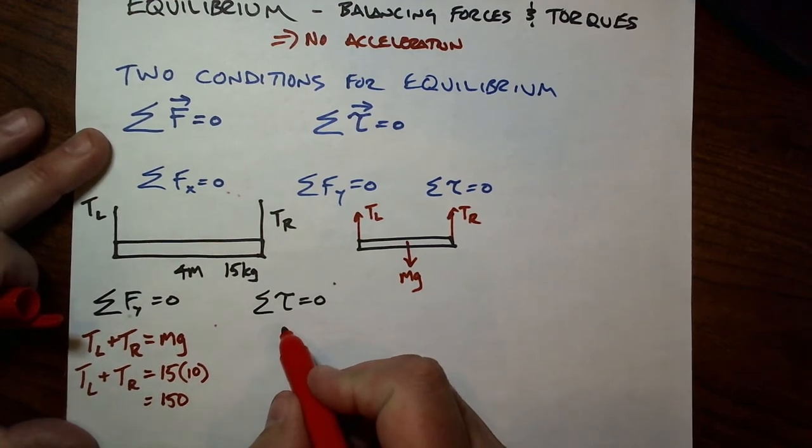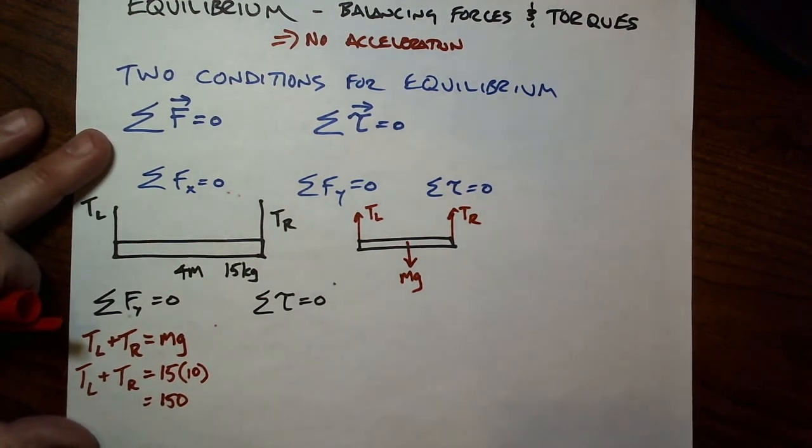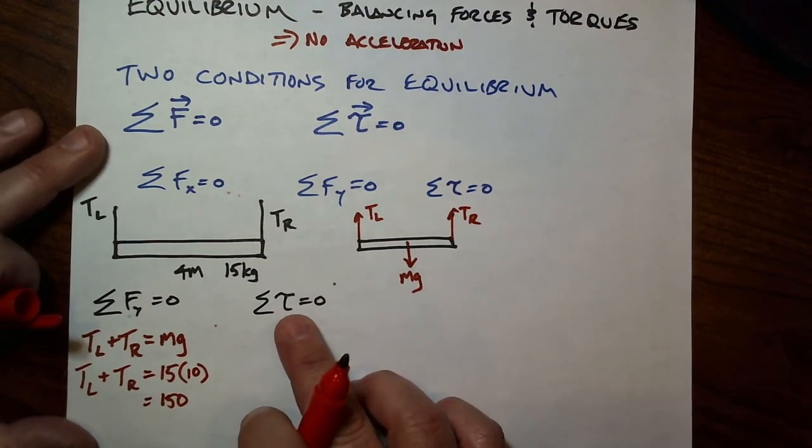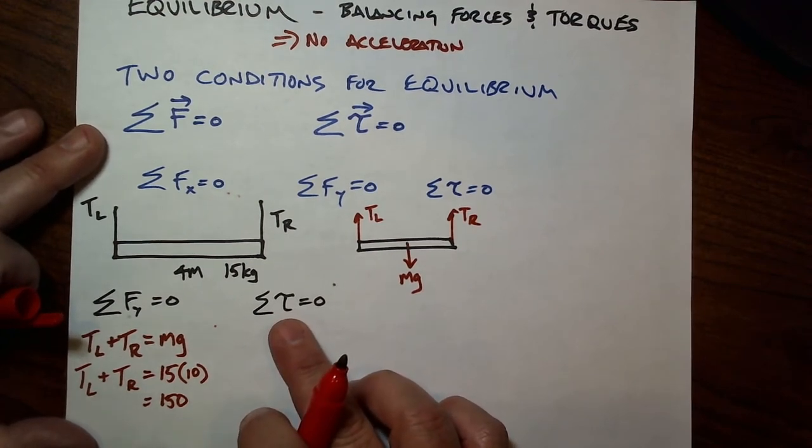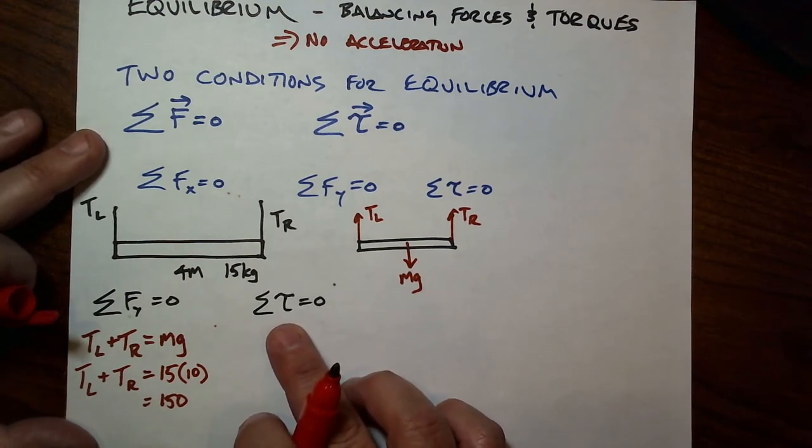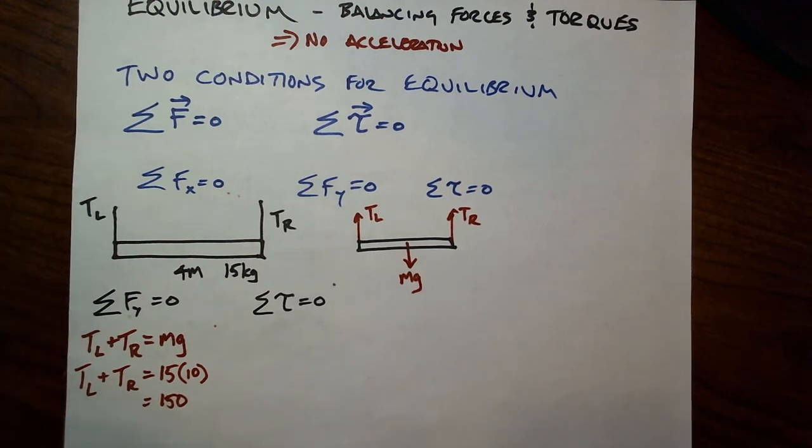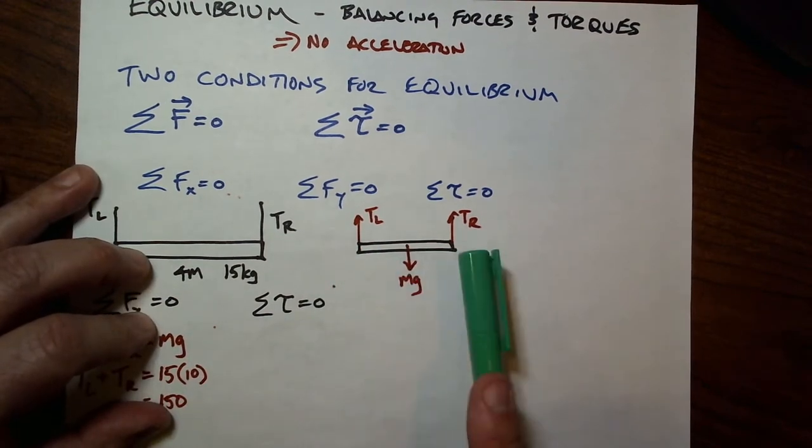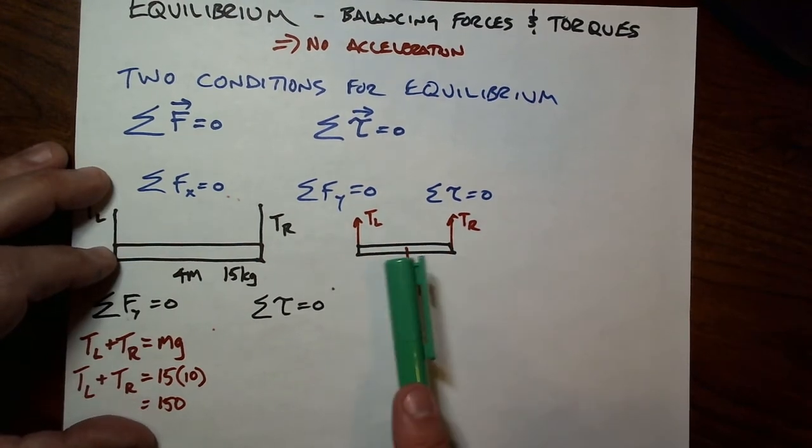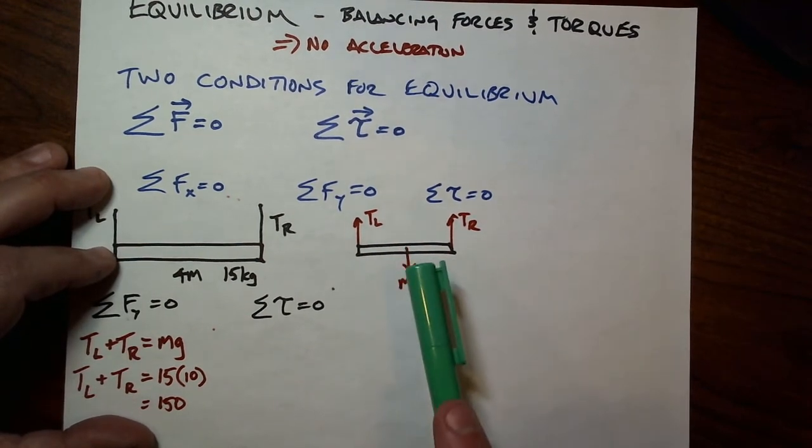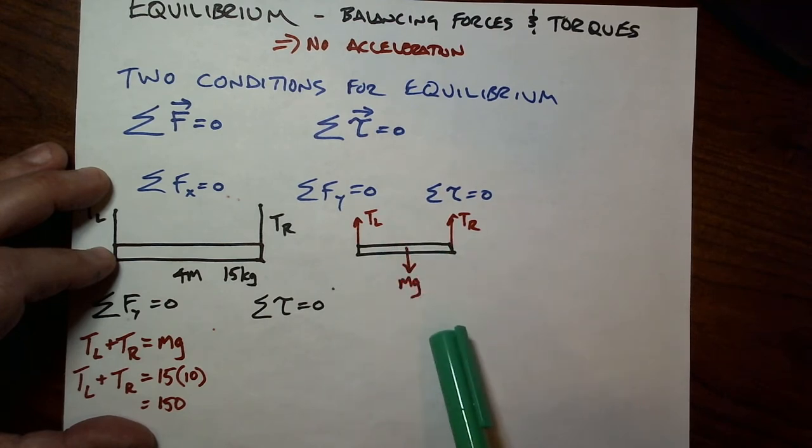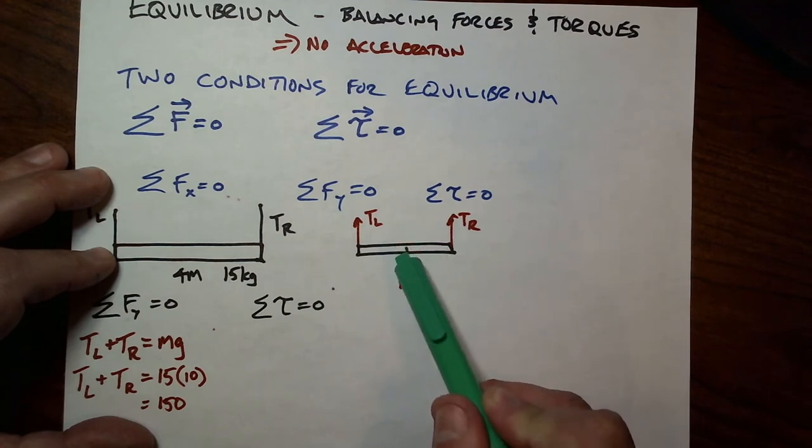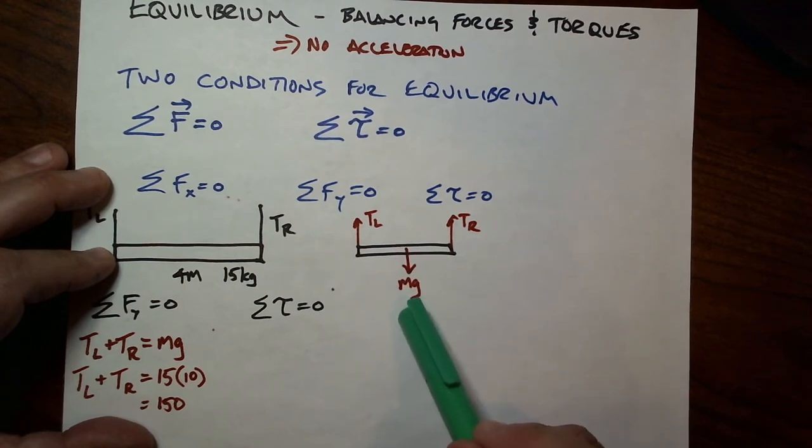In order to do the torques, we need to choose a pivot point because torque is a force acting at a distance from a pivot point. So there are three good choices for the pivot point that I can see: one would be the left-hand side of the plank, one would be the center of the plank, and the other would be the right-hand side. These are all good choices because if you put the pivot point there in the middle, then this force does not create a torque. It does not create spinning because it is a force acting at a distance zero away from the pivot point. The lever arm is zero.